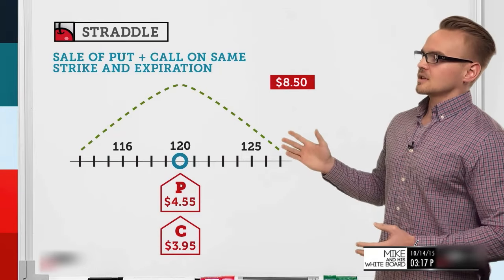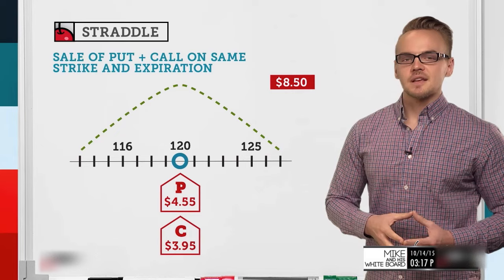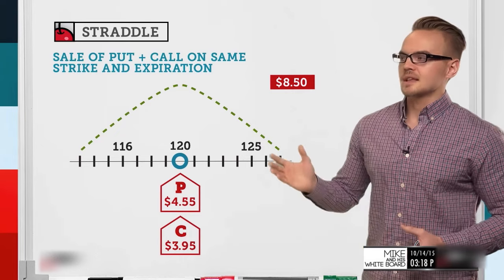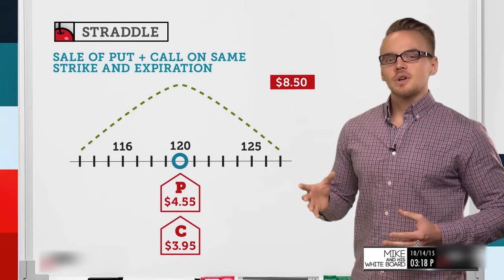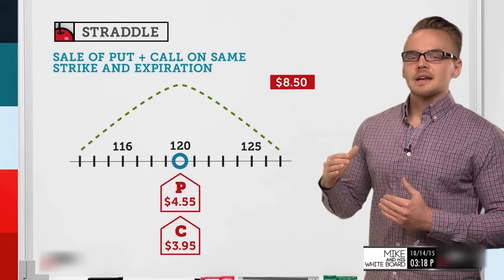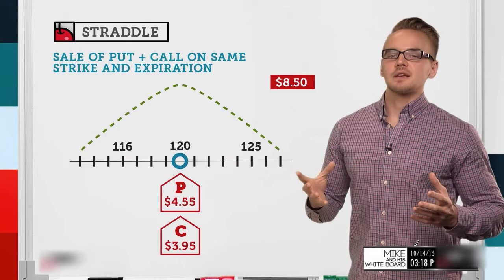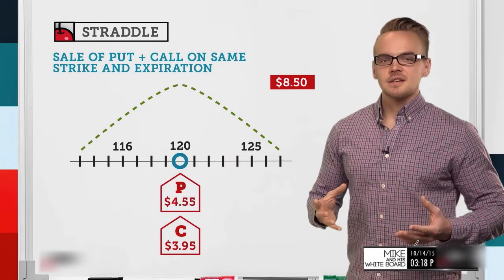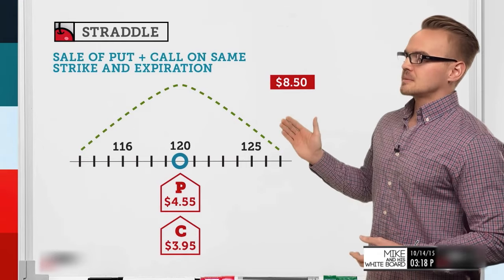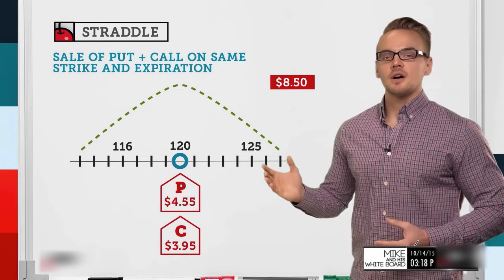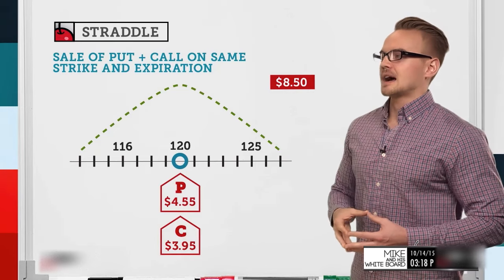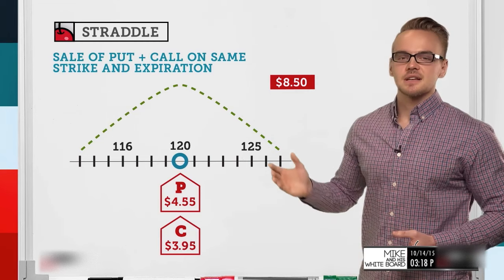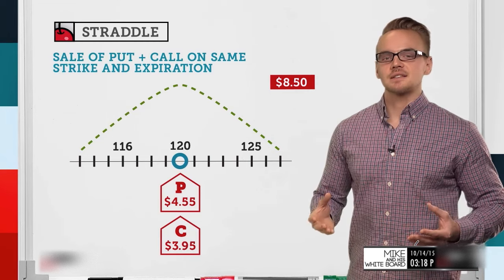Looking at the next slide, we've got a credit of $8.50 in the upper right corner and the same risk graph as before — the same put and call on the 120 strike. We've broken it out to show what sort of credit we might be getting for each option, assuming a normal volatility skew, which is why we're receiving more for the put than the call. The put gives us $4.55 in credit and the call gives us $3.95, totaling that $8.50 credit.